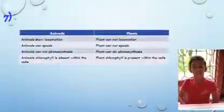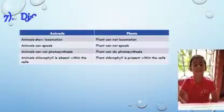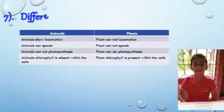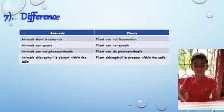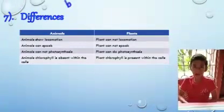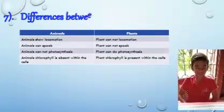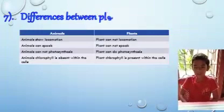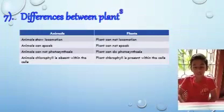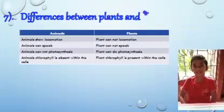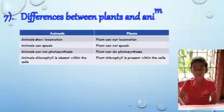Now I will talk about the differences between plants and animals. Animals can locomote; plants cannot locomote. Animals can make sounds; plants cannot. Animals cannot do photosynthesis; plants can do photosynthesis.